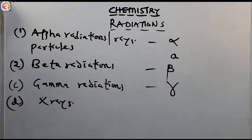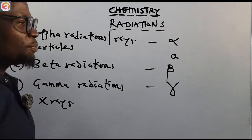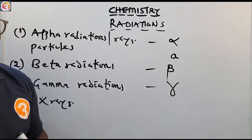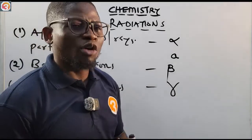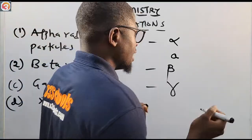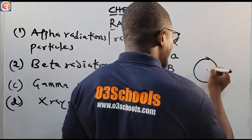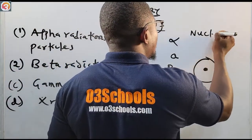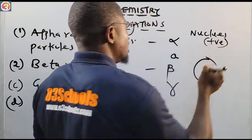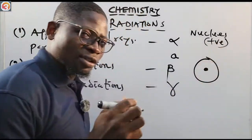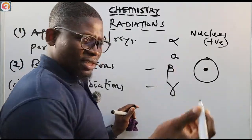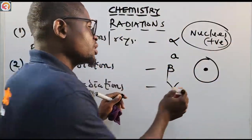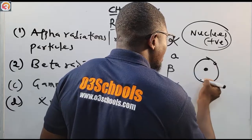It is possible for an electron of low energy to collapse into the nucleus of an atom. The nucleus of an atom is positively charged because it contains protons and neutrons — protons are positively charged, neutrons are neutral — making the overall charge of the nucleus positive.